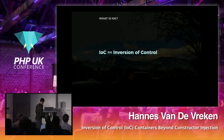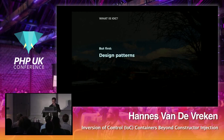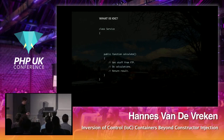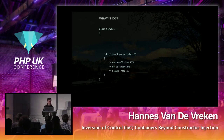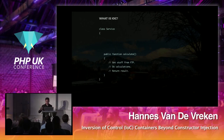To understand inversion of control, we need to understand a couple of design patterns first. So this is a quick five-minute lesson on design patterns. There's no better way to show off design patterns than showing some code. This is the first class I want to show you — it's a super simple service class with one method that calculates something: it gets something from storage, does some calculations, and returns the result.